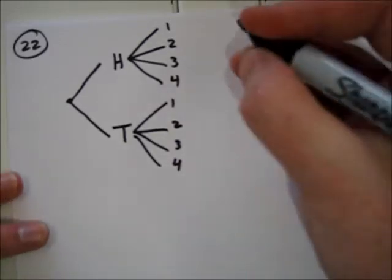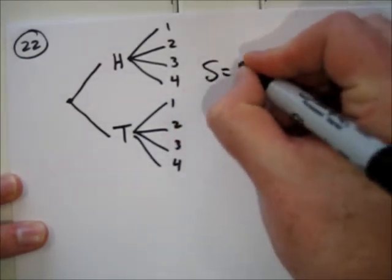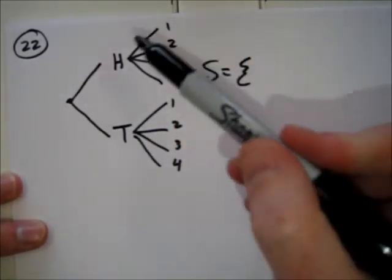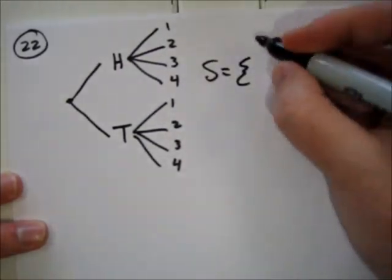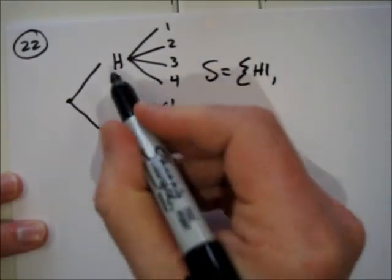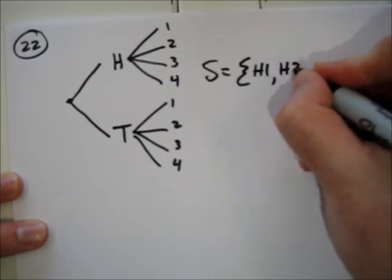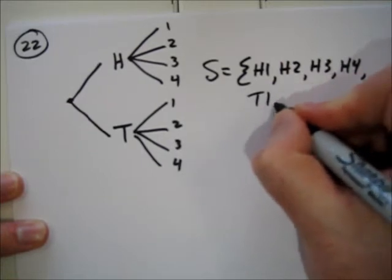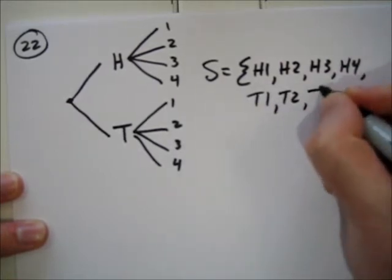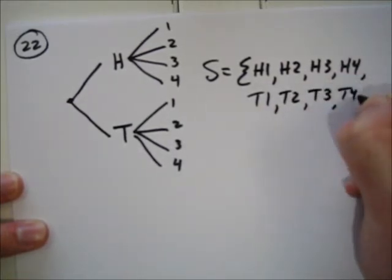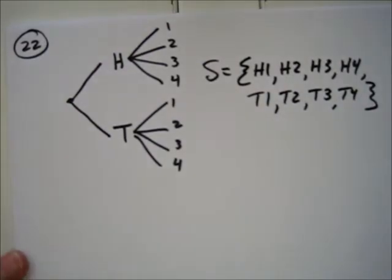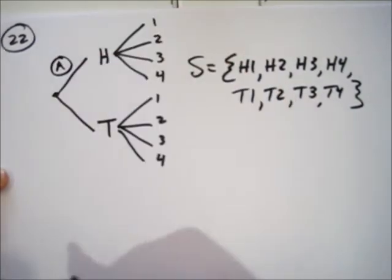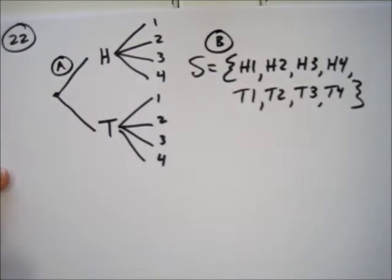Part B is to list out the sample space, which is usually indicated with a capital S. There are eight items in the sample space. You could flip heads and then get a 1, heads and a 2, and so on, until you get tails 1, tails 2, all the way out to tails 4. So there's our tree diagram and the sample space.